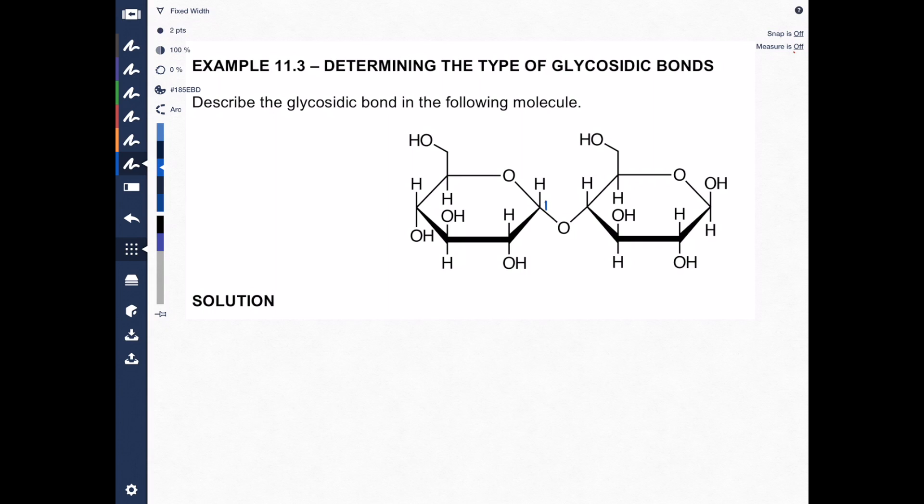This will be carbon number 2, carbon number 3, carbon 4, carbon 5, and there's carbon 6. Every monosaccharide has six carbons. It's just a matter of where they are.